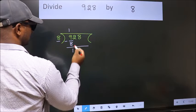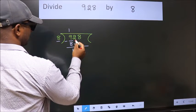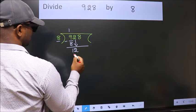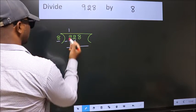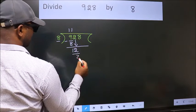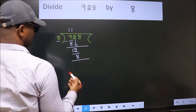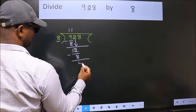After this, bring down the beside number. So 2 down. So 12. A number close to 12 in 8 table is 8 once 8. Now we subtract. We get 4.